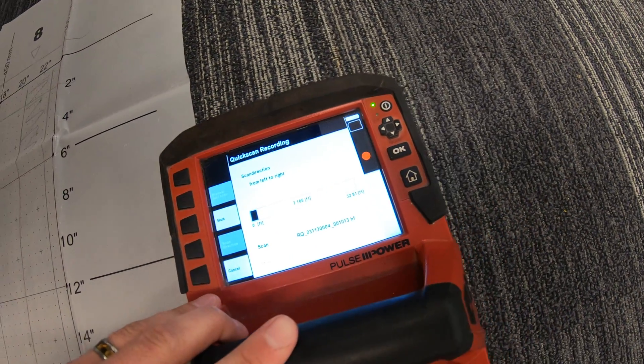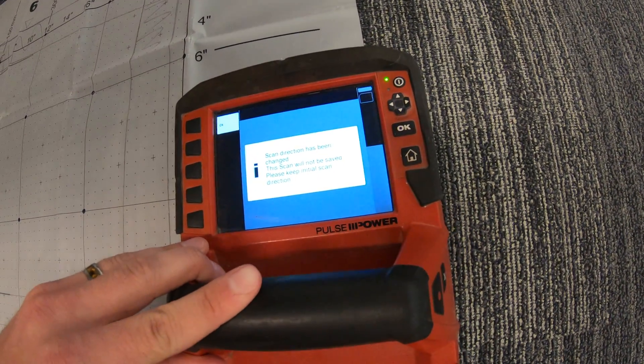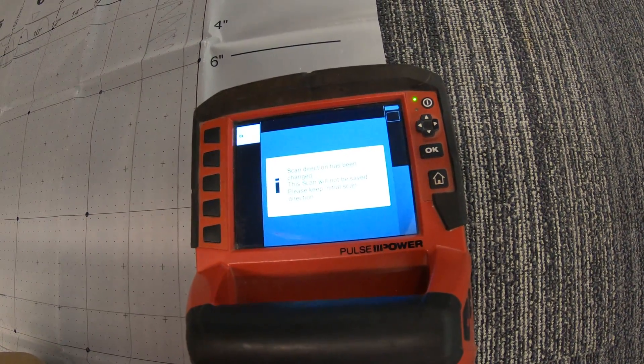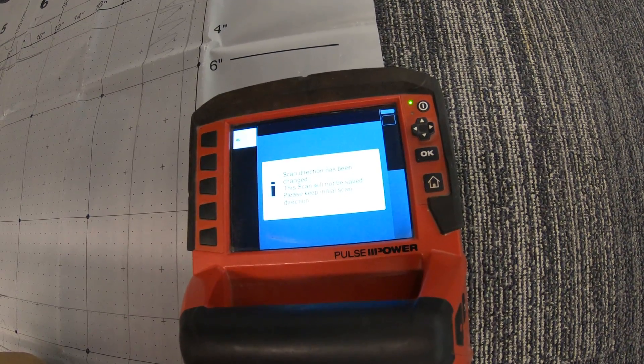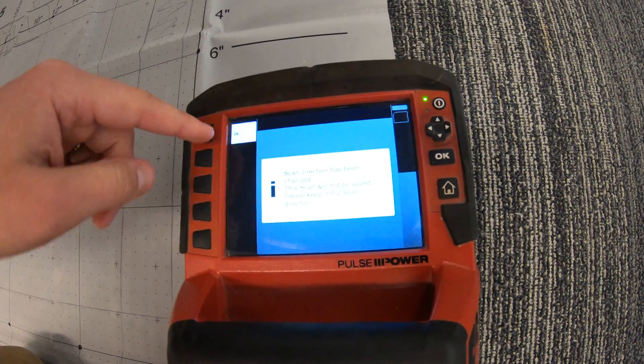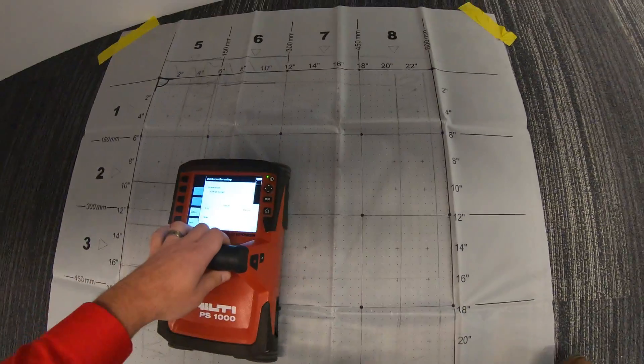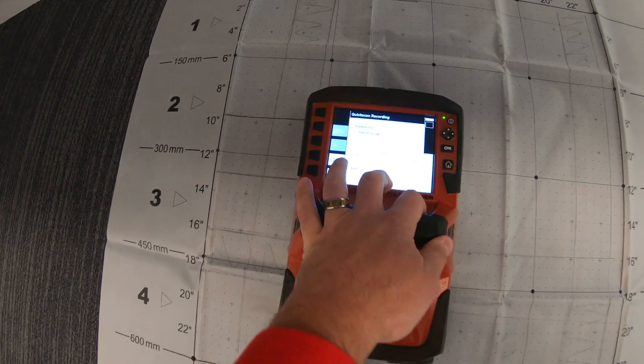I believe if I go back, it's going to tell me that because I changed directions, it won't be saved and I just start over. So just keep that in mind—you have to keep it all in one direction as you do this. So it's a little bit different than the quick scan detection.